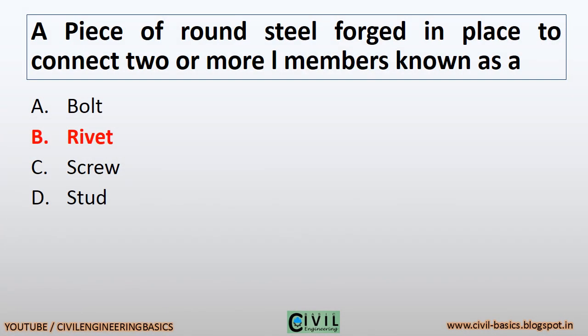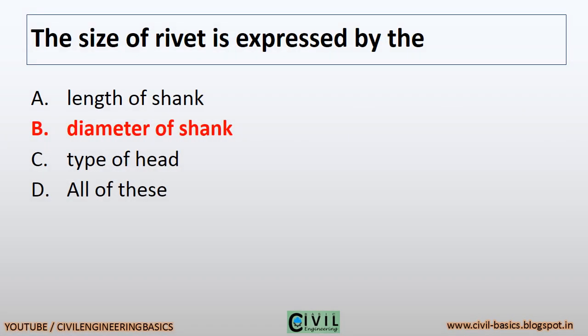A piece of round steel forged in place to connect two or more members is known as a rivet. The size of rivet is expressed by the diameter of shank.